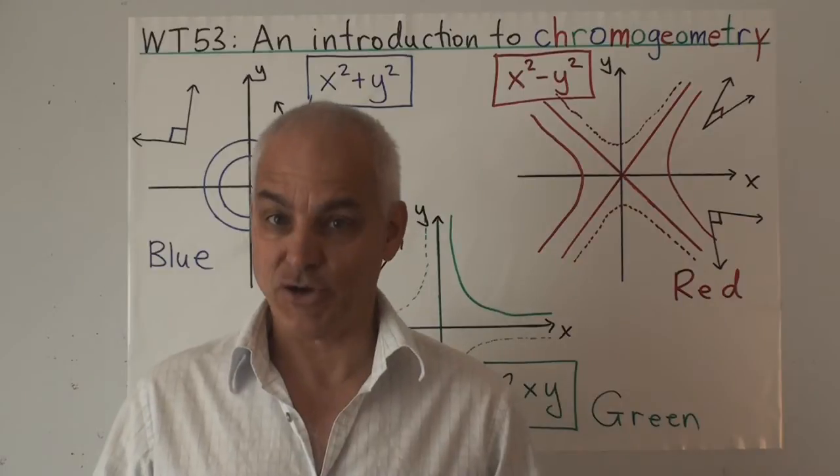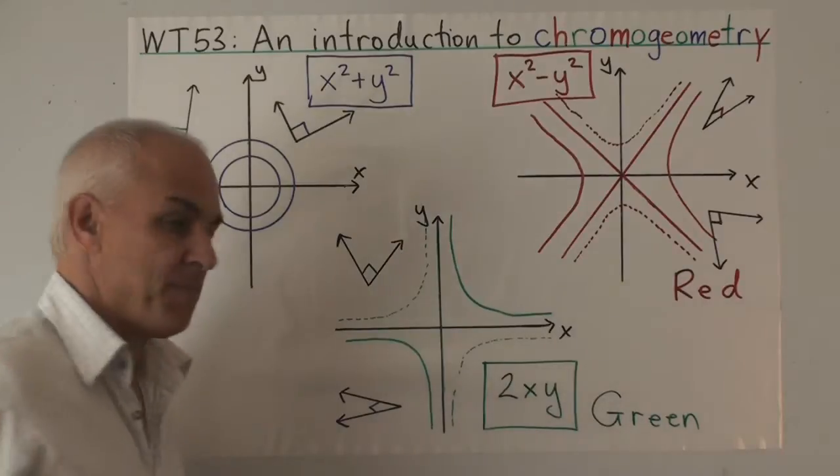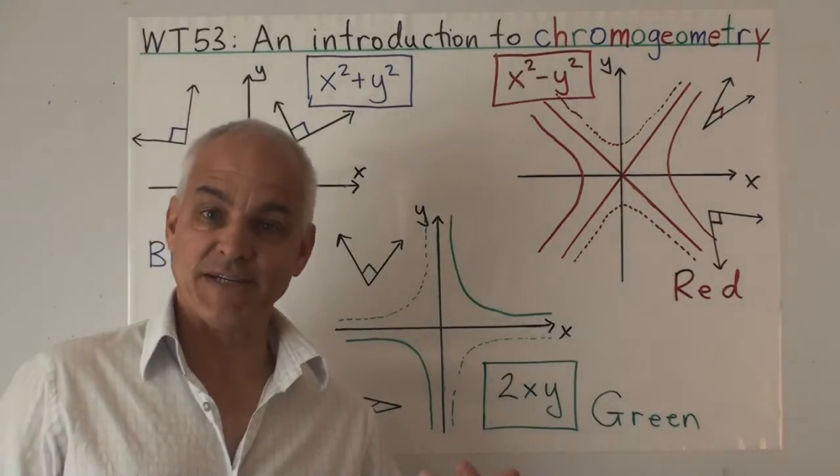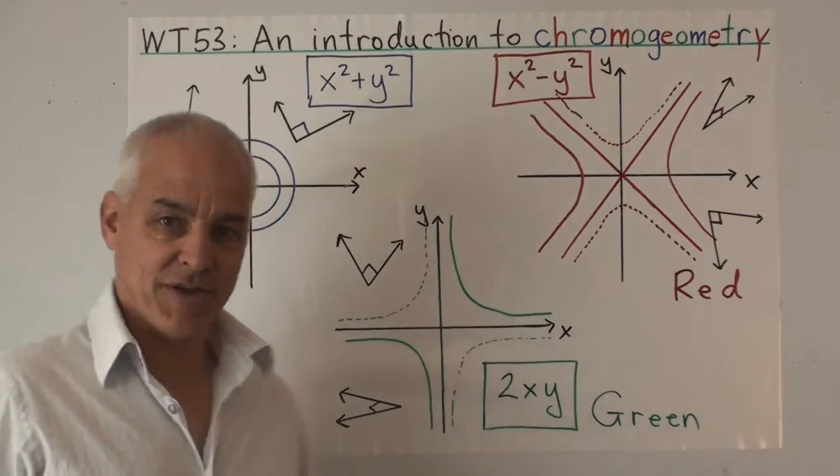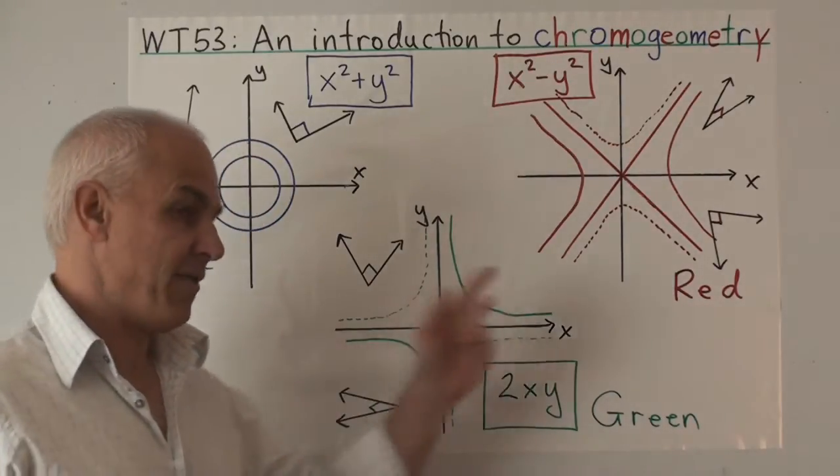So our three geometries are called blue, red and green. This is to parallel what the physicists use in particle physics in the theory of quarks and gluons. They have a theory called chromodynamics, who knows, may end up being related to this in some fashion or another.